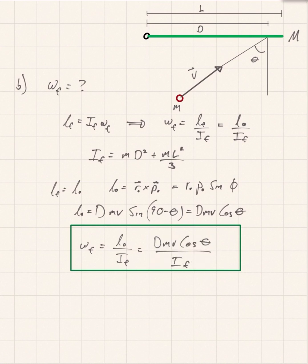So then your final angular speed is d m v times cosine theta over If, where If was already derived in the previous part of the problem and it's equal to m times d squared plus m l squared over three.